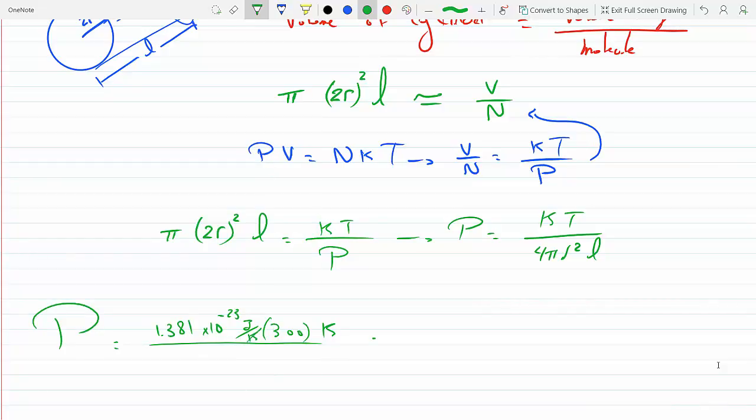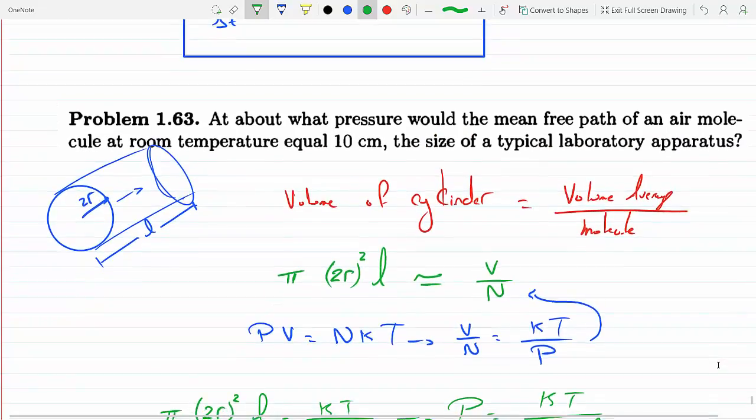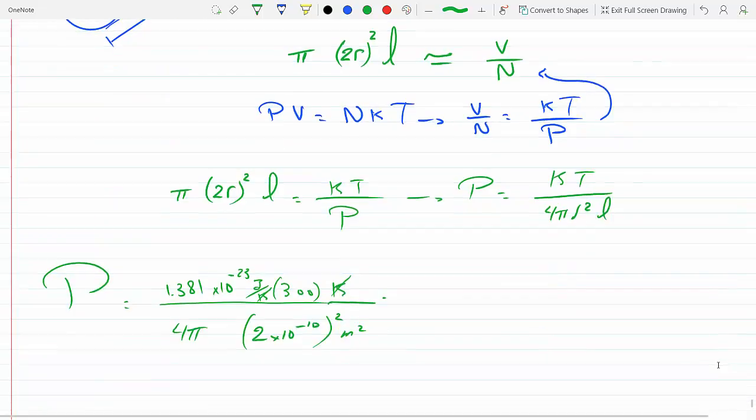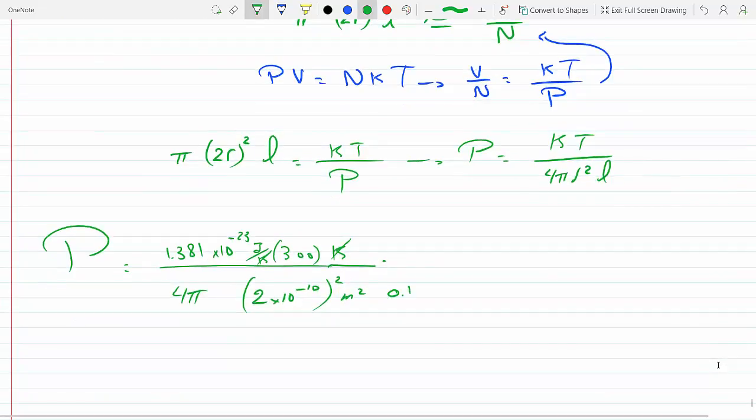So that Kelvins cancel out. Divided by 4π. Now the radius—the average, what we could use, the average size of an air molecule, I would say is about 2 × 10⁻¹⁰ meters. So when we square it, this is meters squared. And then we are told that the mean free path is 10 centimeters, so that's 0.1 meters.